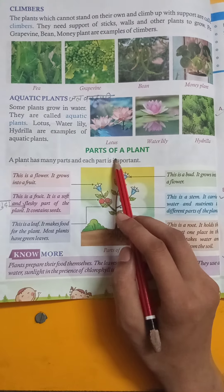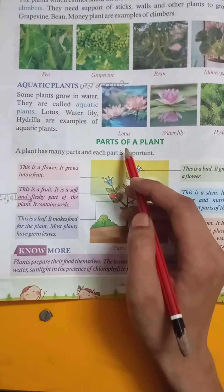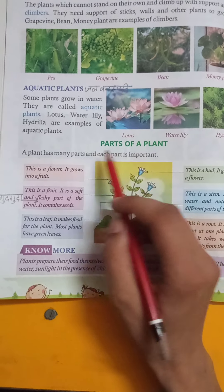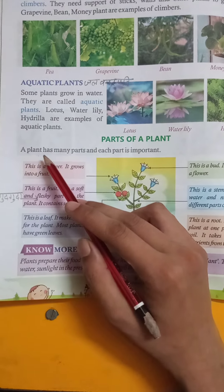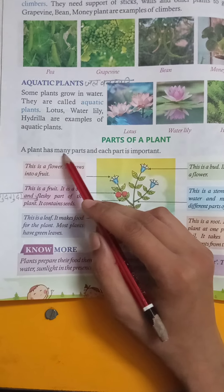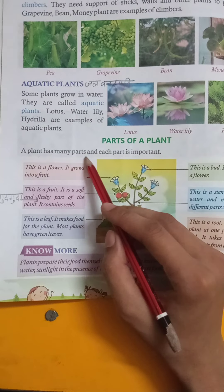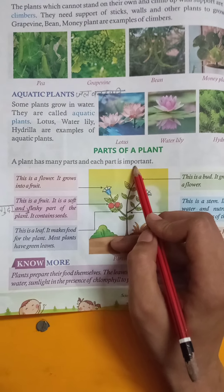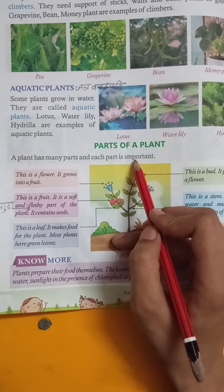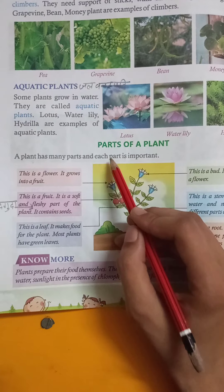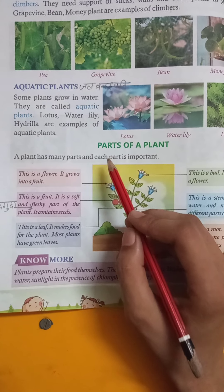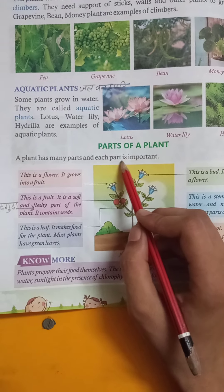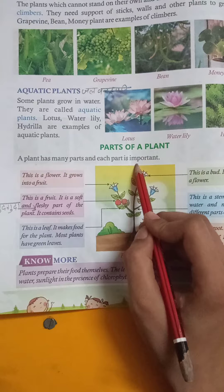Parts of a plant — poudhe ke bhaag. A plant has many parts and each part is important.